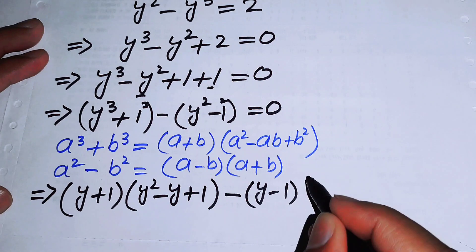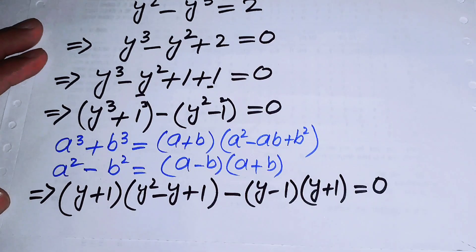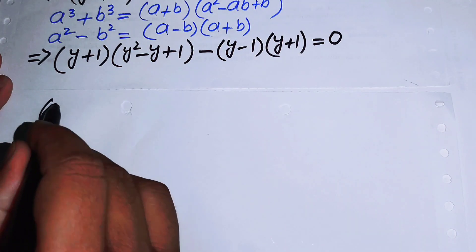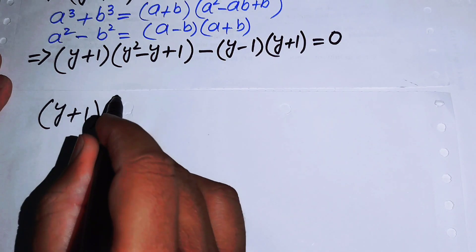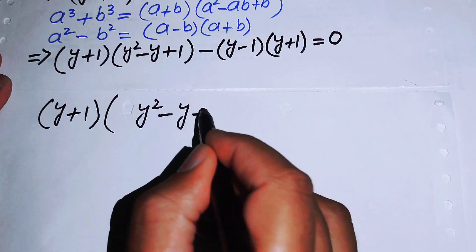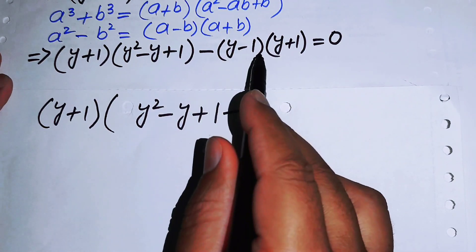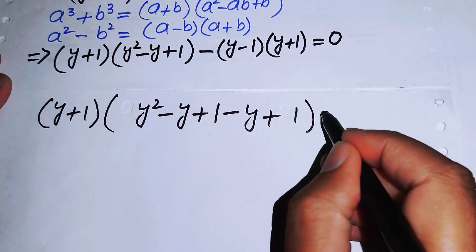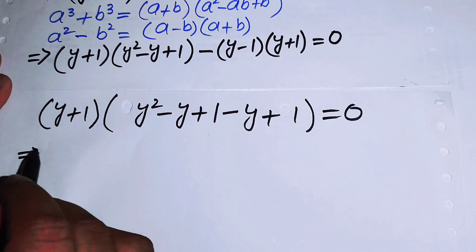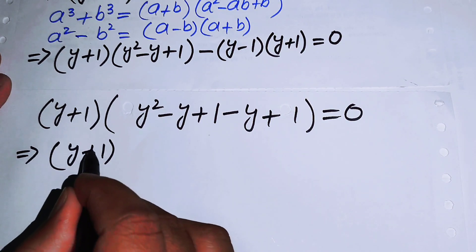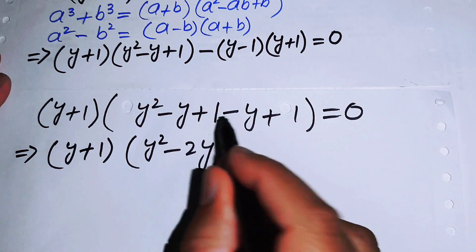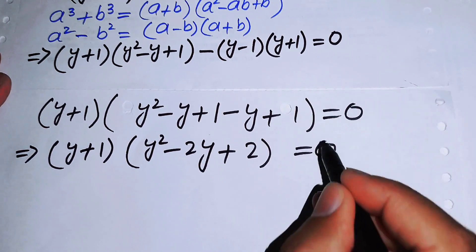This gives (y plus 1)(y squared minus y plus 1) minus (y minus 1)(y plus 1) equals 0. Taking (y plus 1) common from both terms yields (y plus 1)(y squared minus y plus 1 minus (y minus 1)) equals 0, which simplifies to (y plus 1)(y squared minus 2y plus 2) equals 0.